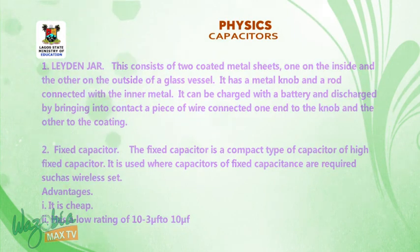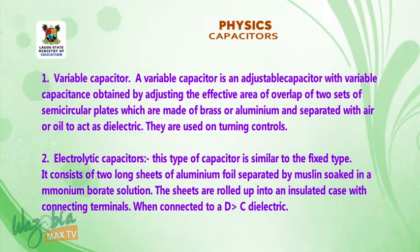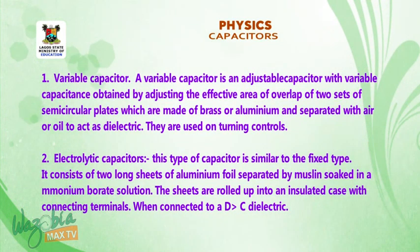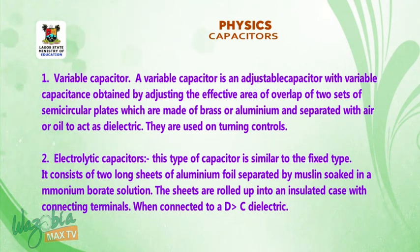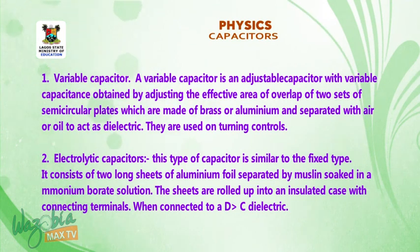3. Variable capacitor. A variable capacitor is an adjustable capacitor with variable capacitance obtained by adjusting the effective area of overlap of two sets of semicircular plates which are made of brass or aluminum and separated with air or oil to act as dielectric.